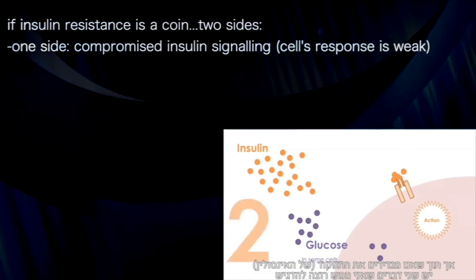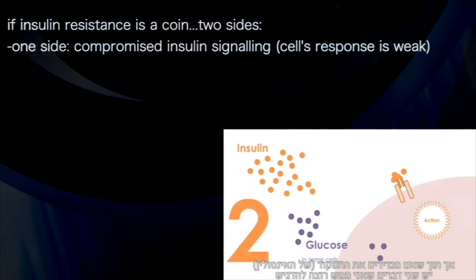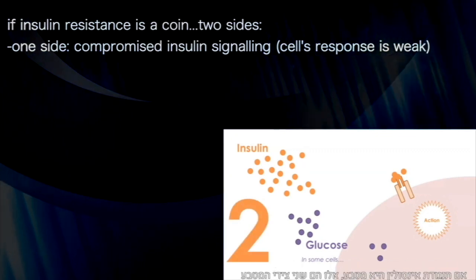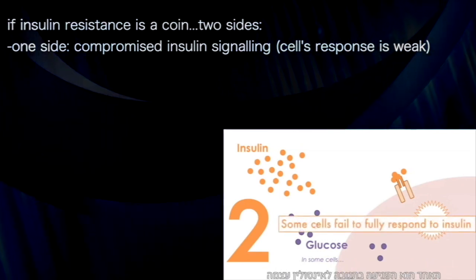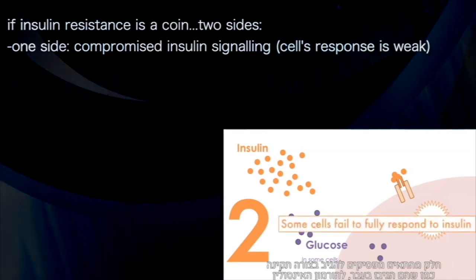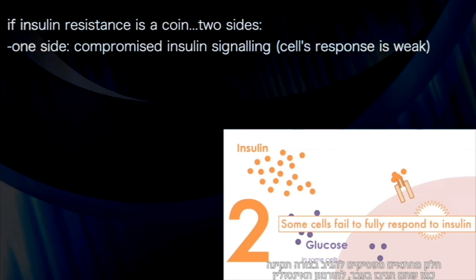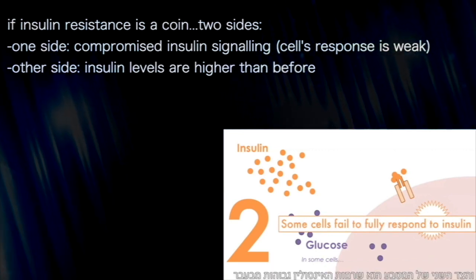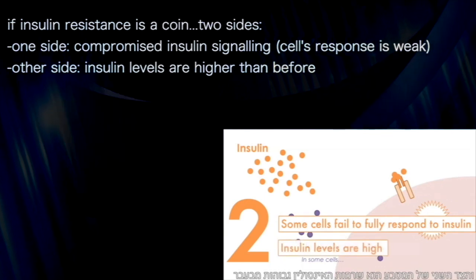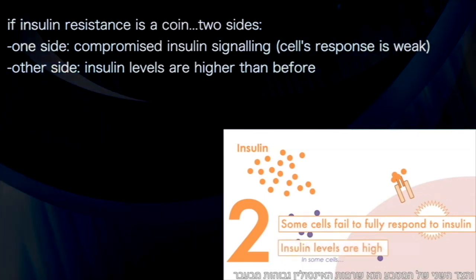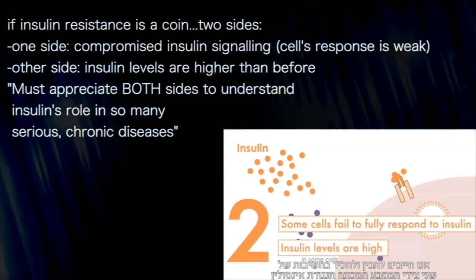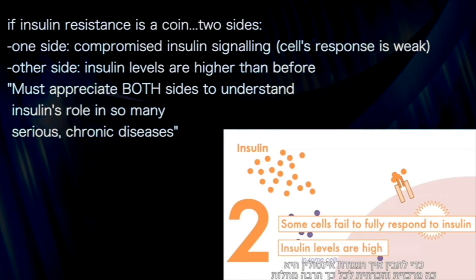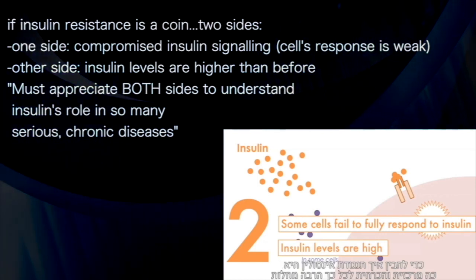In this definition, there are two things I really want to emphasize. If insulin resistance is a coin, these are the two sides. One is the compromised insulin signaling itself — some cells aren't responding as well to the hormone insulin. And second, insulin levels are higher than they were before. We must appreciate both of these sides of the coin to understand how insulin resistance is so pivotal and fundamental to so many diseases.